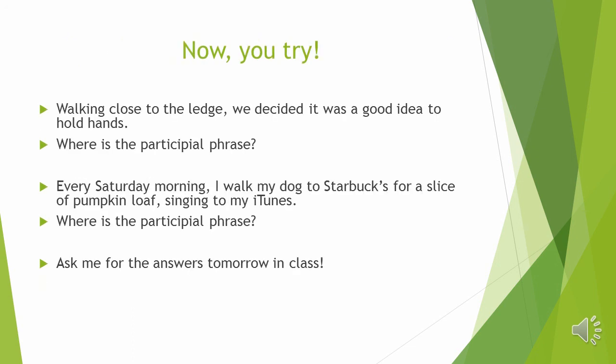Now it's your turn to try. Here are a couple of examples. First: "Walking close to the ledge, we decided it was a good idea to hold hands." Where is the participial phrase? Remember: start by asking yourself where's the participle — look for an -ing, -d, or -ed word that looks like a verb but acts as an adjective. And don't forget, commas are your friend. Second example: "Every Saturday morning, I walk my dog to Starbucks for a slice of pumpkin loaf, singing to my iTunes." Where is the participial phrase?